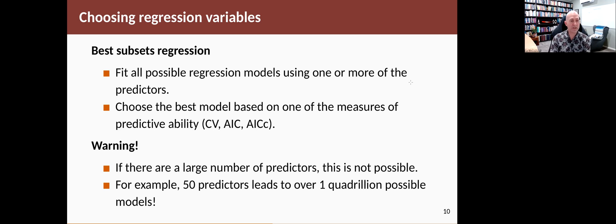For example, if you've only got 50 predictors, which is not a huge number of predictors in a regression context, that can lead to over one quadrillion possible models, which you're never going to fit them all. So we need an alternative strategy.